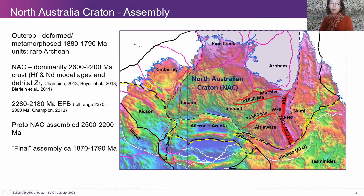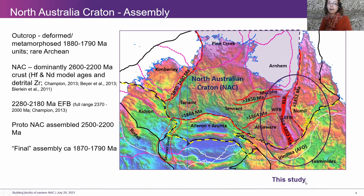There's a core that probably formed early on, certainly by 2200 Ma if not earlier, and then the final assembly involves Kimberley, Aileron, and Numel all coming in sometime during this period. We're focused here in this study on the Mount Isa region, looking at the edge of these east–west trending basement terrains and trying to better understand what lies beneath all those cover sequences in Mount Isa.